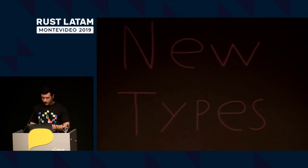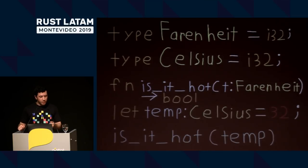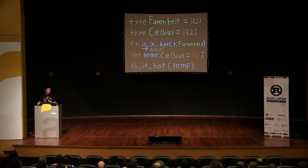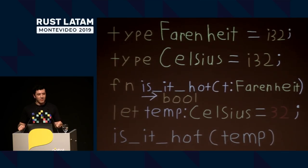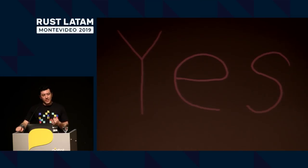Let's get started with new types. Let's say we have some code where we want to create a temperature conversion library between Fahrenheit and Celsius. You might say, okay, I'll have a type Fahrenheit, make it a 32-bit integer, and I'll have a type Celsius as a 32-bit integer. I have a function 'is it hot?' that takes a Fahrenheit temperature and returns a bool. We'll assign a Celsius value of 32 and put it into that function. Will this compile? Yes, unfortunately you can do that.